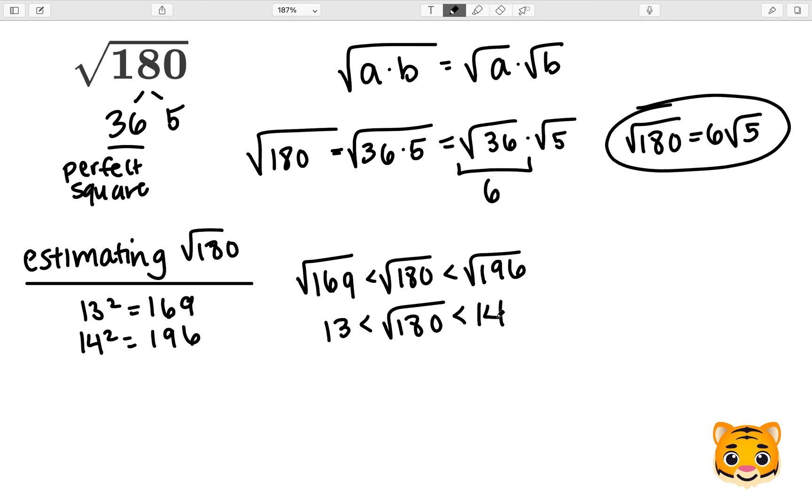In order to find the value that the square root of 180 is closest to, we want to look at the difference between our perfect squares and the 180 value. We will do this by subtracting. First, we will do 180 minus 169 which will give us 11. Now we'll do 196 minus 180 which will give us 16. We can then see that 169 is closest to 180. Therefore, 13 will be closest to the square root of 180.